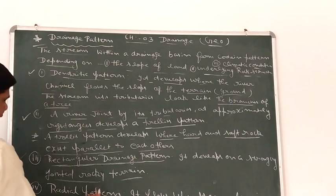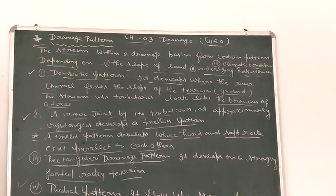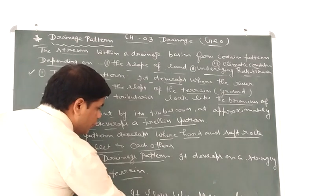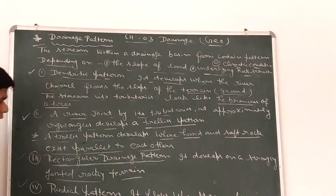And third, the most important is radial pattern. If we talk about radial pattern, when streams flow in different directions from a central peak or high part of land.